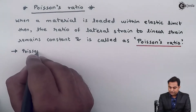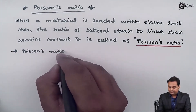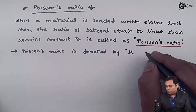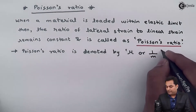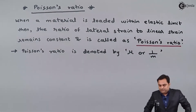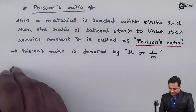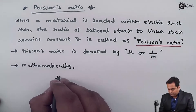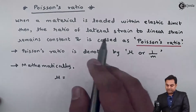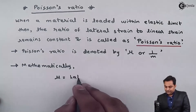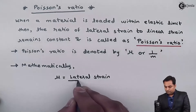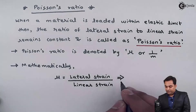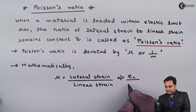Poisson's ratio is denoted by mu or by 1 upon m — these are the notations for Poisson's ratio. Mathematically, Poisson's ratio mu is equal to the ratio of lateral strain to linear strain, where lateral strain is denoted by e suffix l and linear strain is denoted by e.